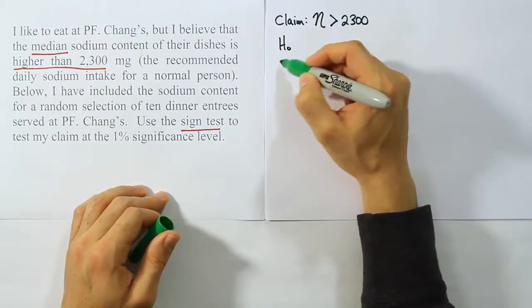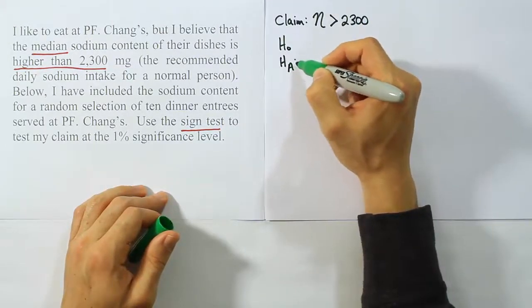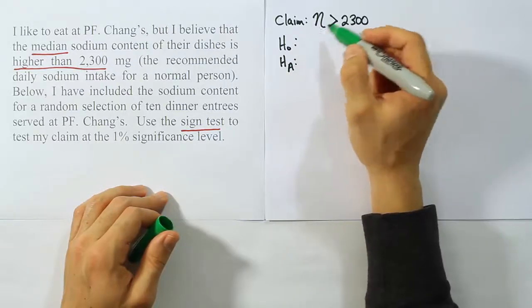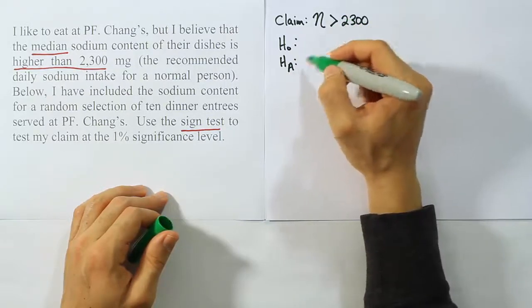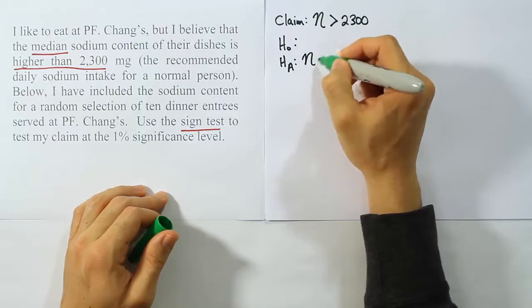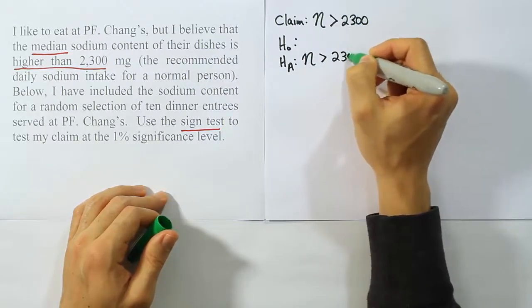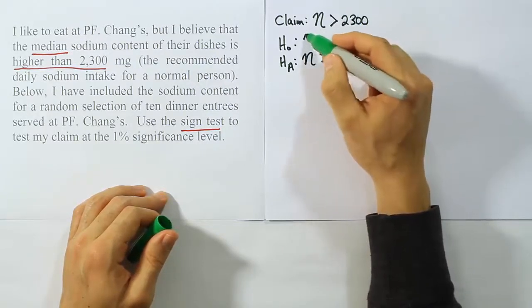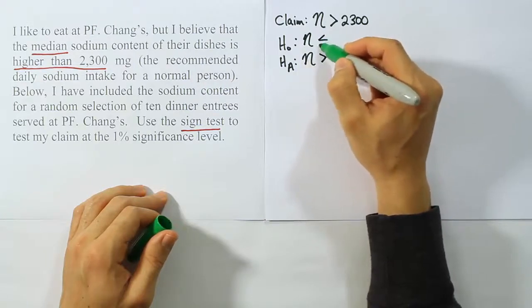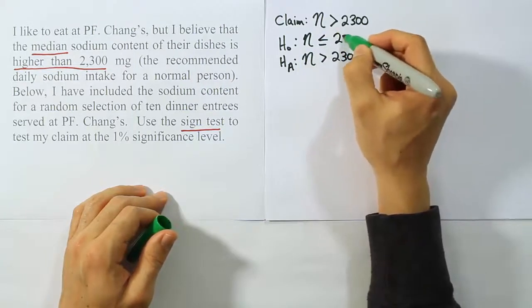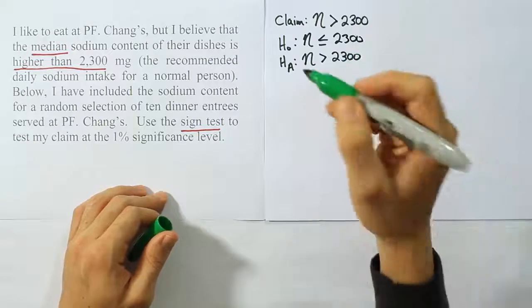Now from there I'll come up with H0 and HA. Looking at the symbol here, greater than, I know that HA and the claim are the same, so I'll let this be η is greater than 2300. And of course H0 has to express the opposite idea or the complement, so we'll say less than or equal to 2300.